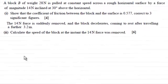Hi, now in this question we're given that a block B of weight 28 newtons is pulled at constant speed across a rough horizontal surface by a force of magnitude 14 newtons inclined at 30 degrees above the horizontal.